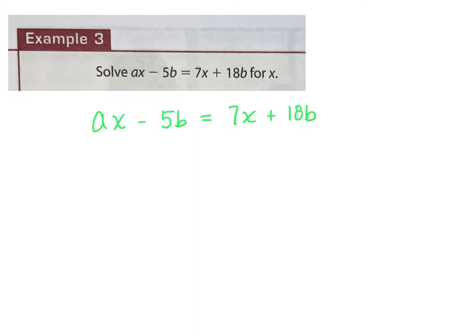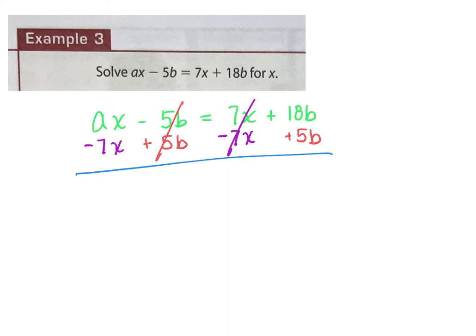It doesn't matter which side — you're going to get the same answer. I'm going to move my X's to the left side, so I'm going to subtract 7X over here, which cancels on the right. Then I need to move my B's over to the right side, so I add 5B over, which cancels on the left. What I have is AX minus 7X on the left — I can't really combine those right now, so I just write AX minus 7X.